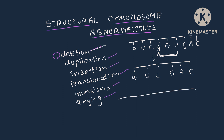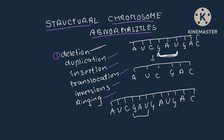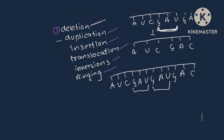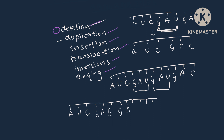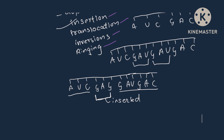In duplication, a segment is duplicated — for example, G-A-U gets duplicated, appearing twice in the strand. In insertion, a new strand segment is inserted into the existing strand — for example, A-U-C followed by a new segment G-A-G, then continuation of G-A-U and G-A-C, and this new strand gets inserted.